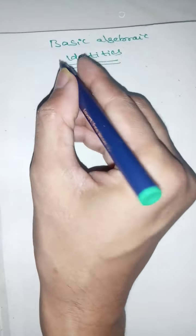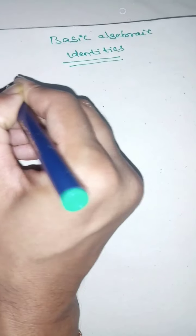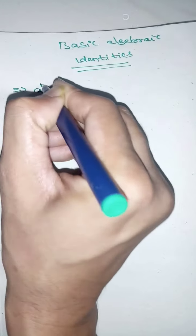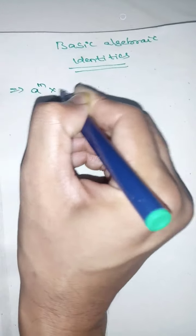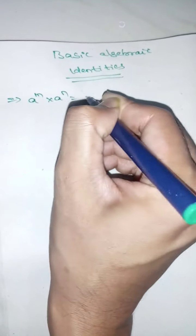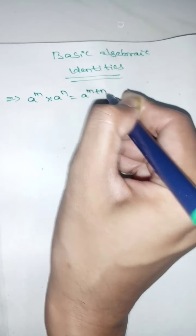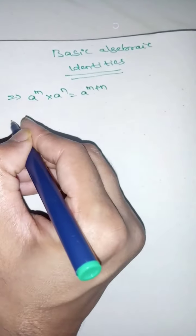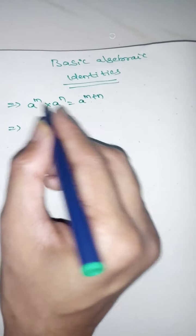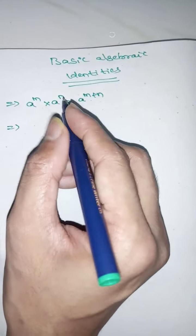Today we are going to learn the basic identities. The first one is a power m into a power n is equals to a power m plus n. Here the bases are same but different powers.